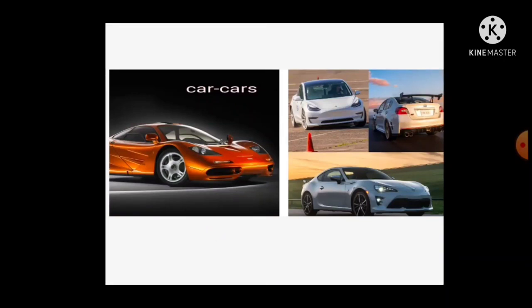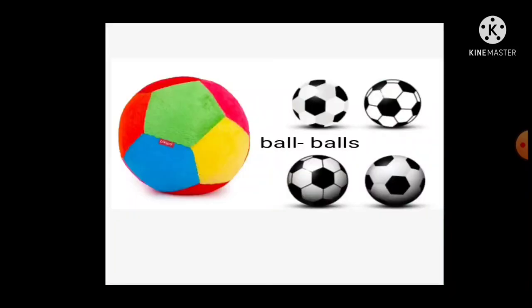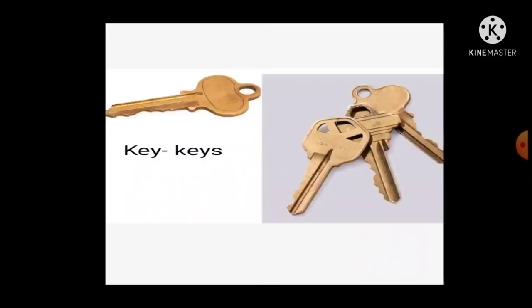Rule one: add S to the singular. Car — cars; ball — balls. Next, key — keys. Here Y comes. Most words: if Y comes, we cut Y and put IES. But in 'keys', Y is near a vowel letter (A, E, I, O, U), so we add only S. Key — keys.